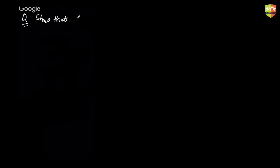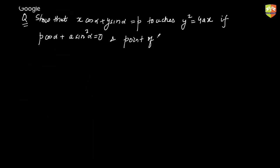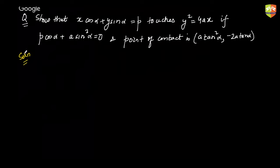Next question: show that x·cosα + y·sinα = p touches y² = 4ax if p·cosα + a·sin²α = 0. Also show that the point of contact is (a·tan²α, -2a·tan α).